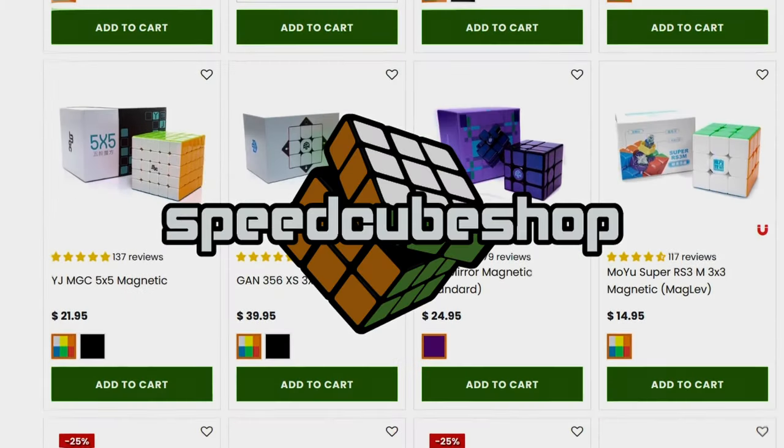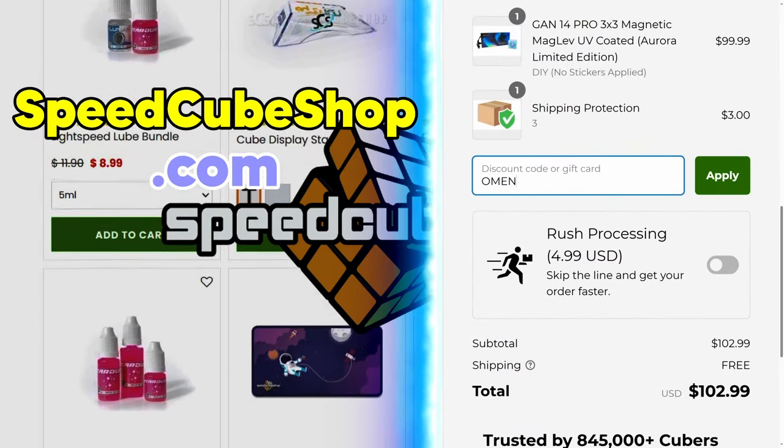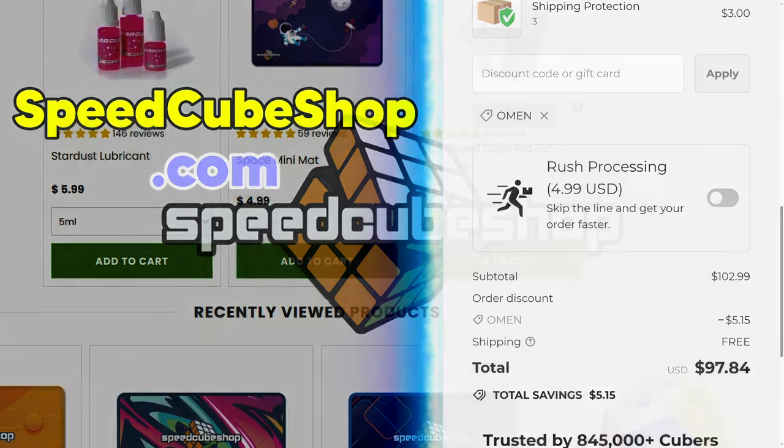A quick link in the description to our sponsor, speedcubeshop.com, where you can buy all of your cubing needs. Use code OMEN for a discount.